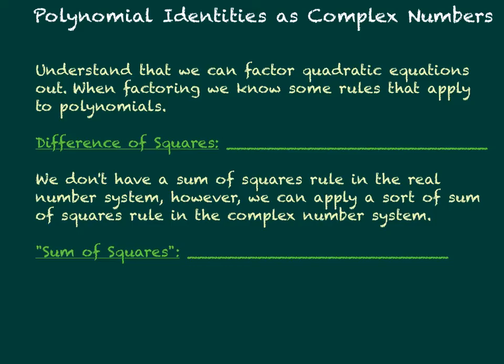For example, the difference of squares rule says that if we have a squared minus b squared, we can factor that out to a minus b times a plus b.